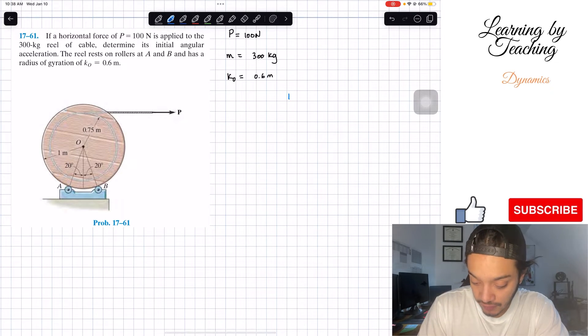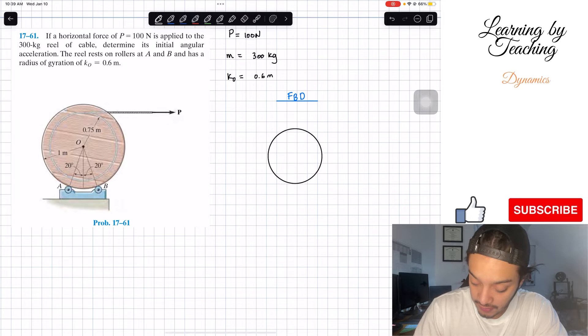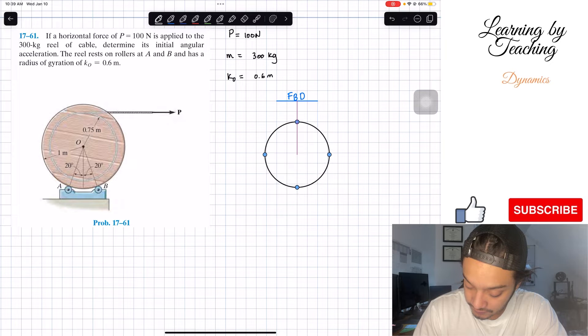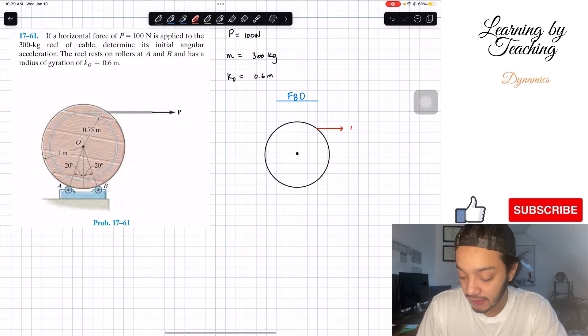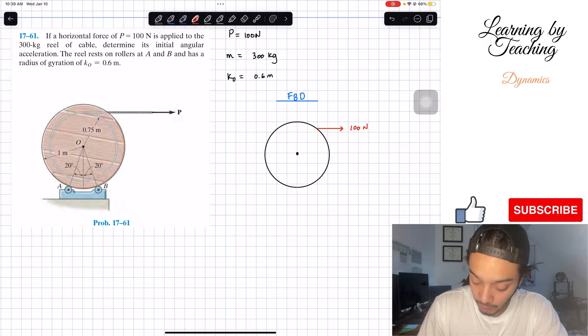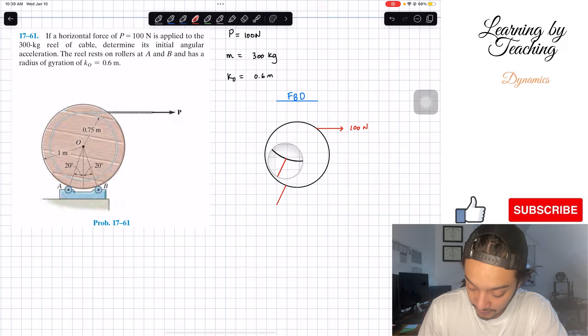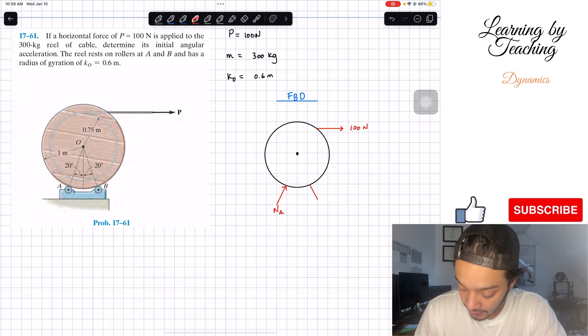After this, let's do some free body diagram for my rail. We have our circle shape with our point O in here. The initial force we have is our force P going to the right, equal to 100 N. We also have our normal forces at A and at B.